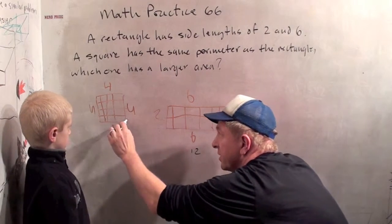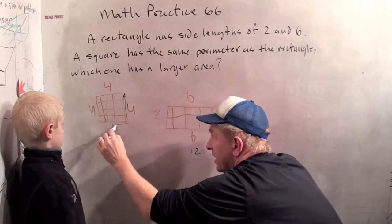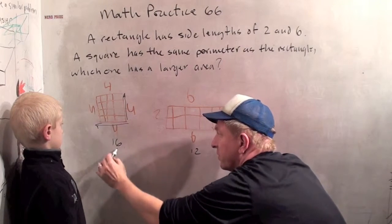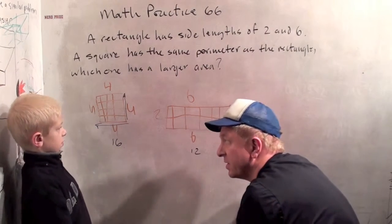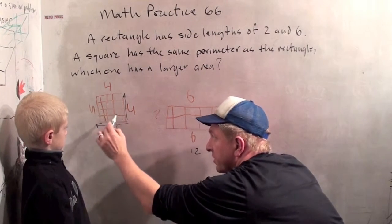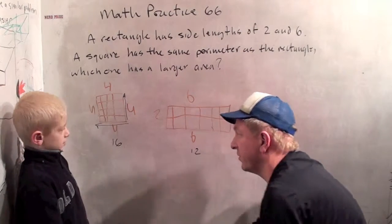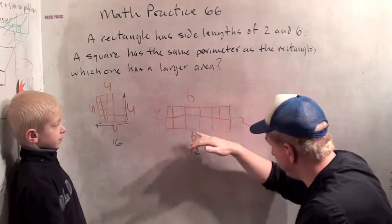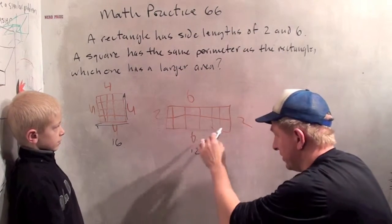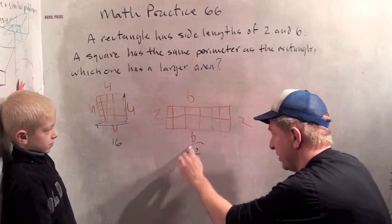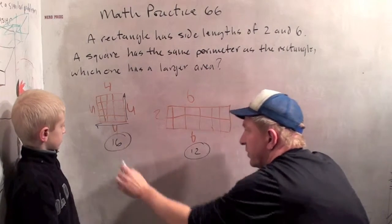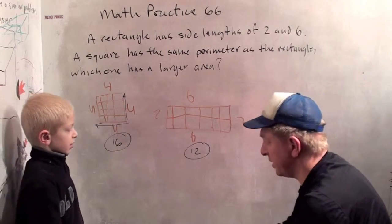Now the area of a square is this side times this side, 4 times 4, which is 16. And the way you can see that is there's 4 squares each way. There's 4 rows of 4, so 4 times 4 is 16. And the area of this one is 2 times 6, because there's 2 rows of 6 squares, or 12. So the one that has the larger area is the square.